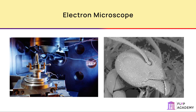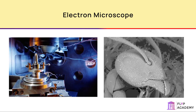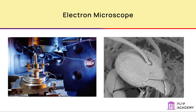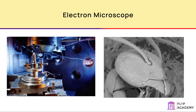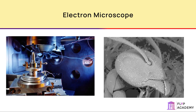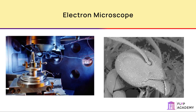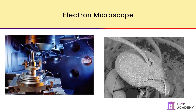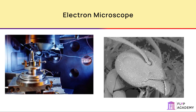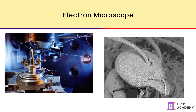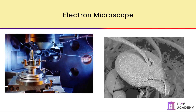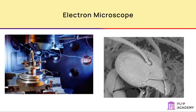An electron microscope has a very high magnification, up to 500,000 times. The resolution of an electron microscope allows you to distinguish between points approximately 0.1 nanometre apart. This means that electron microscopes have been used to find out much of what we know about cells and the organelles that they contain.